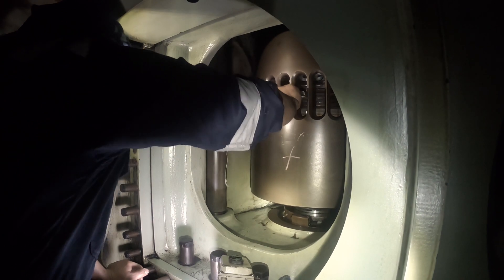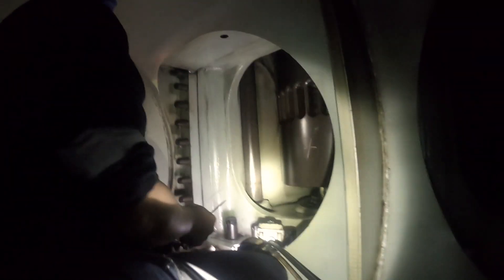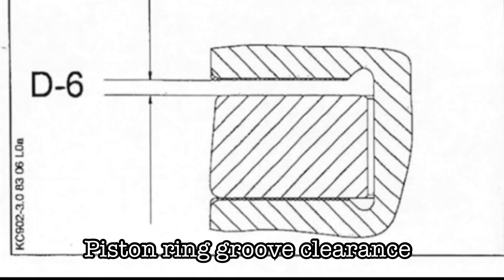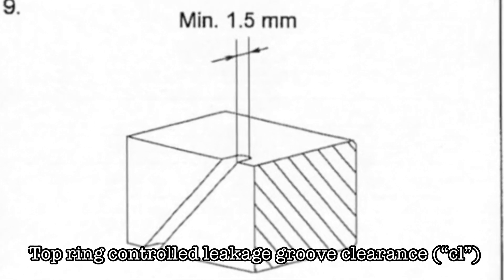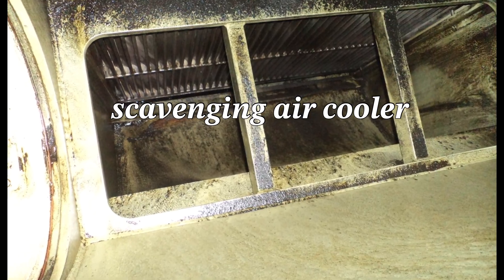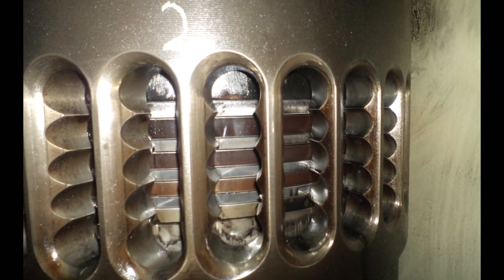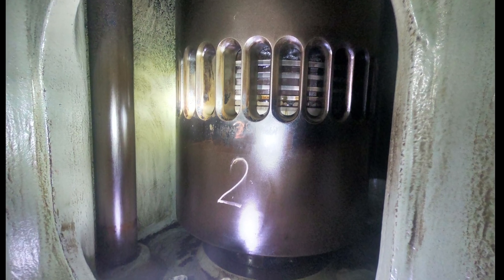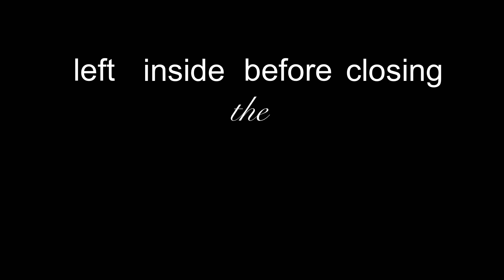Next, check the condition of the piston and piston rings — including measurement of ring groove clearance and top ring groove clearance. Also check the internal condition of the cylinder liner, including lubricating oil function and leaking fuel injectors. Check the overall condition of the scavenge space, and finally be sure to check for rags or tools left inside before closing the scavenge space.